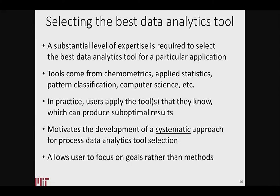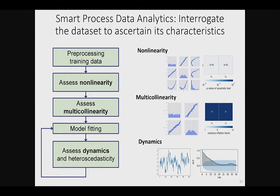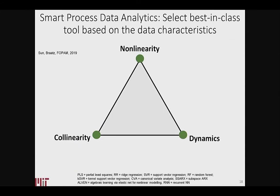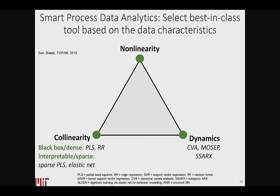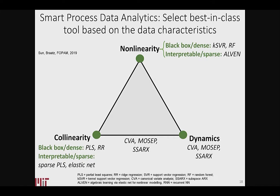That motivates a systematic approach to have the user focus on goals rather than methods. In the machine learning community, they call that AutoML. But we've shown, and others have shown, that those are very poor when applied to process data. So one of the things we've been doing is actually interrogating the data set to ascertain its characteristics systematically and then picking the best methods. It's basically an expert system — it analyzes the data, has a bunch of if-then statements. You can represent it as a decision triangle describing an expert system.